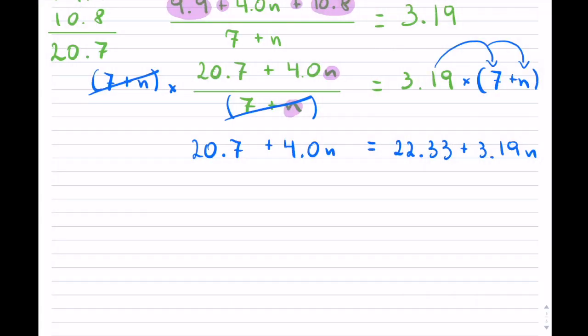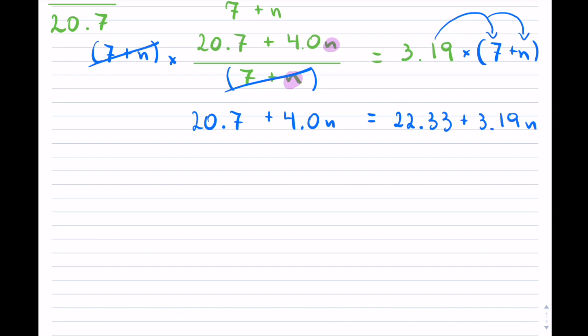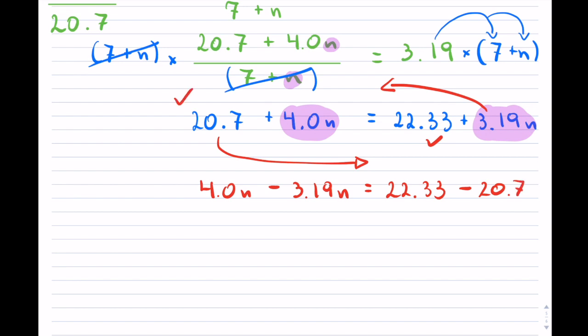Okay, so now what? Now hopefully you're seeing that I have this 4n on the left hand side, and I have this 3.19n on the right hand side, so I'm going to shift and bring this on the left, and then my numbers will go on the right. So that will give me 4n minus 3.19n equals to 22.33, that's that, minus 20.7. Okay, so I shifted those over.